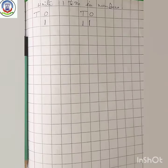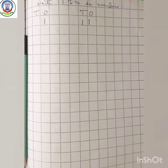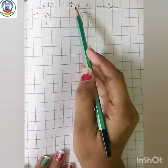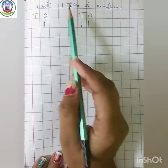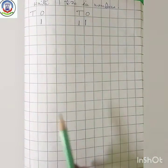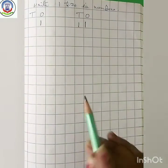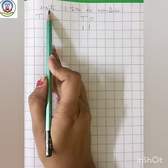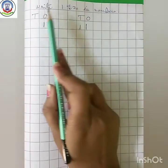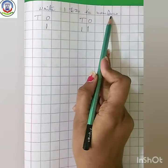Kids, let's start our today's topic. Today I am going to teach you numbers 1 to 20. Let's start our writing. Take out your math's notebook and a sharpened pencil. Write 1 to 20 in numbers.